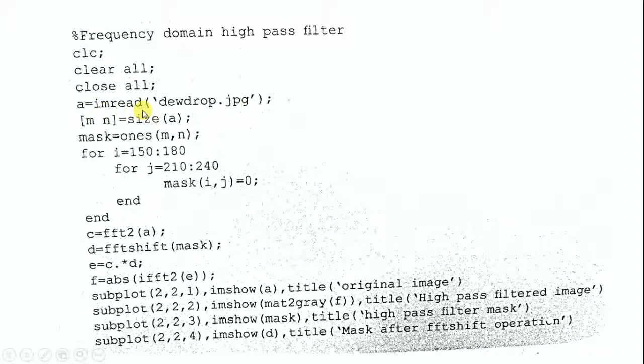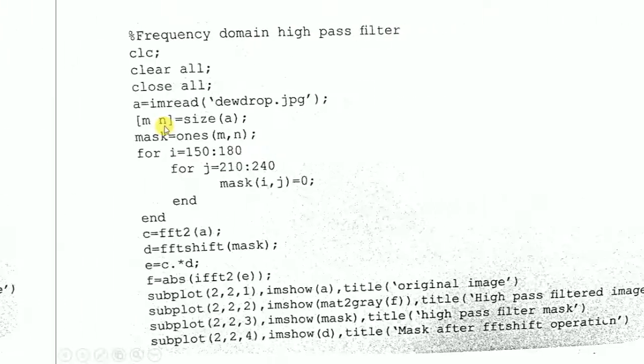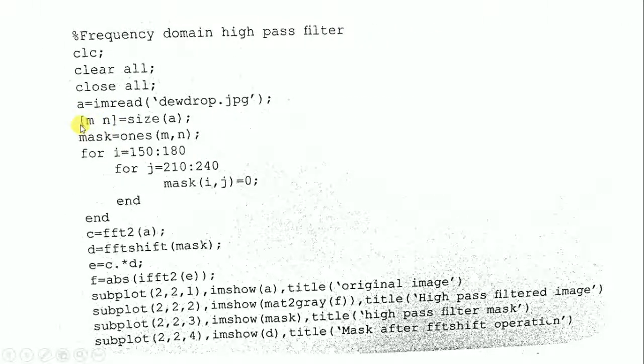imread is used to read the image and it is defined as A. Here, size of A is taken as M comma N, represented in brackets as equal to size of A. M and N represent the row and column of image A.